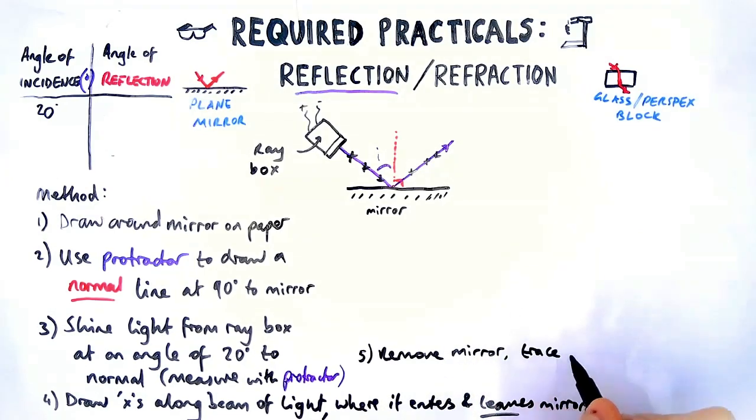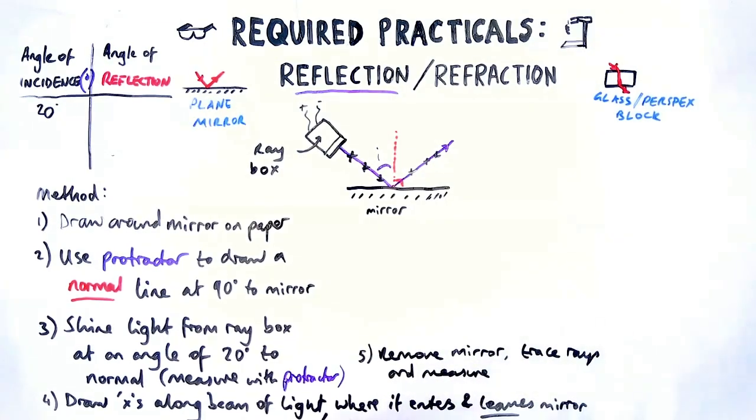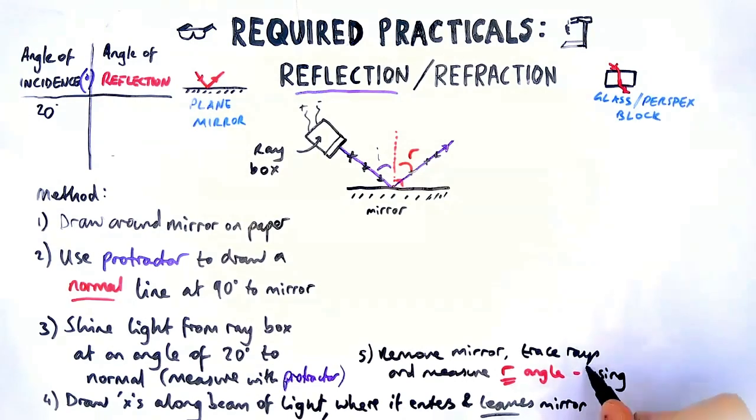Lastly, measure the angle of reflection. So that's this angle here on the diagram. So that's between the ray of reflection and the normal. And again, using a protractor, mention it again. Now what we should find is those two angles are equal, which obviously won't be exactly equal because there's always measurement error. There's random errors as well.